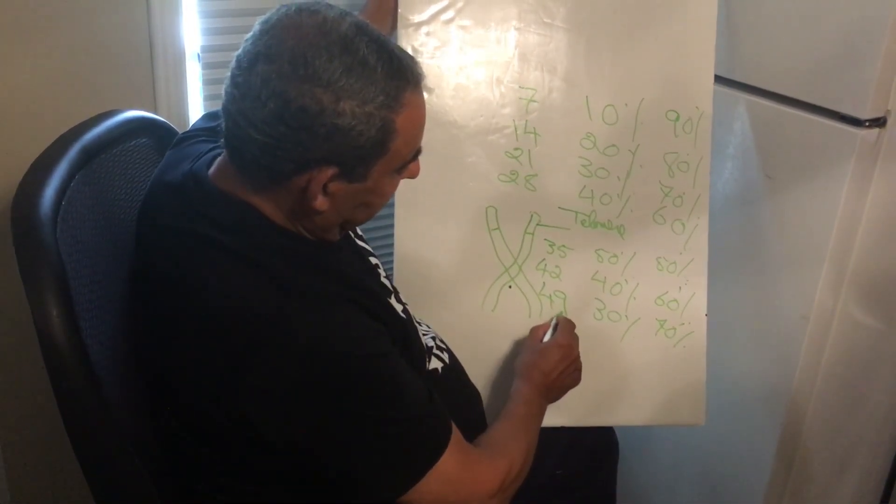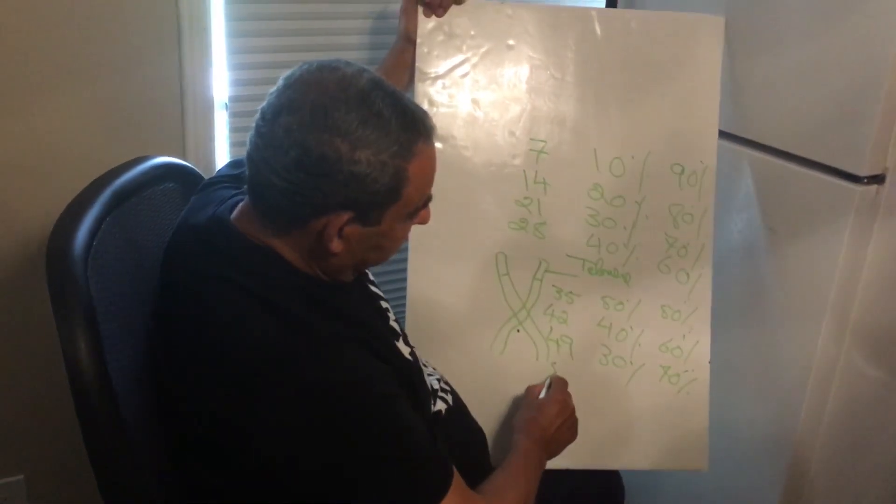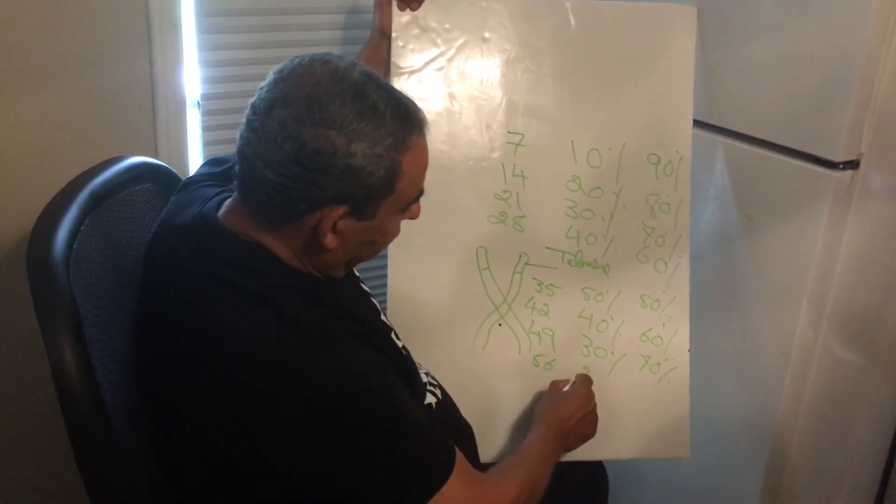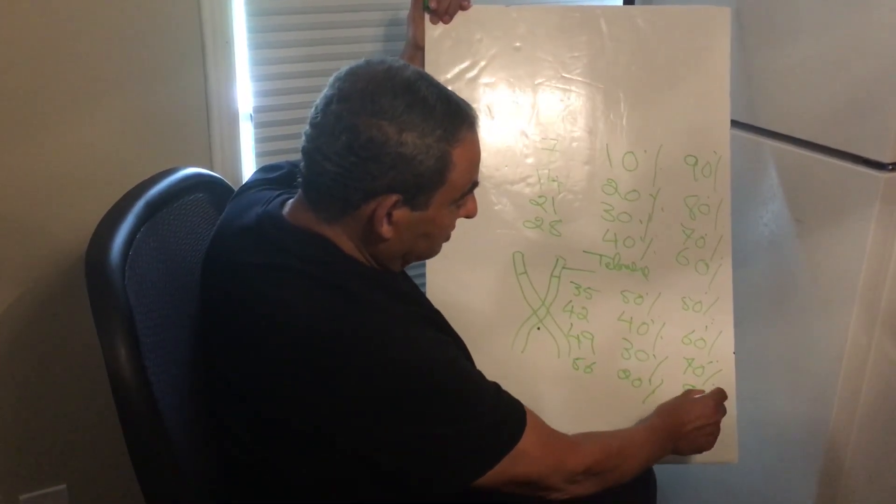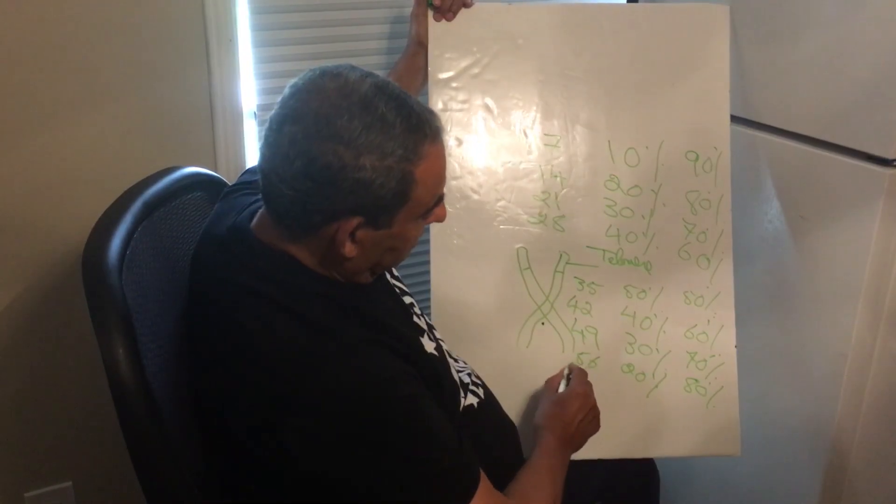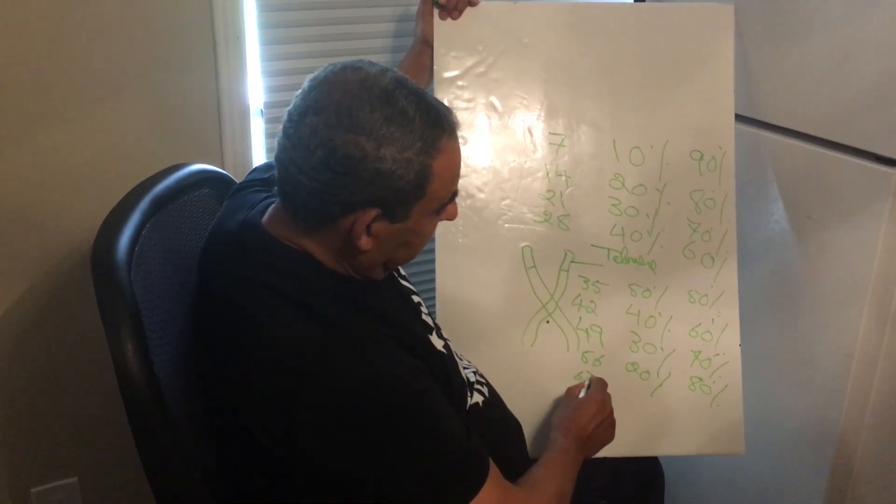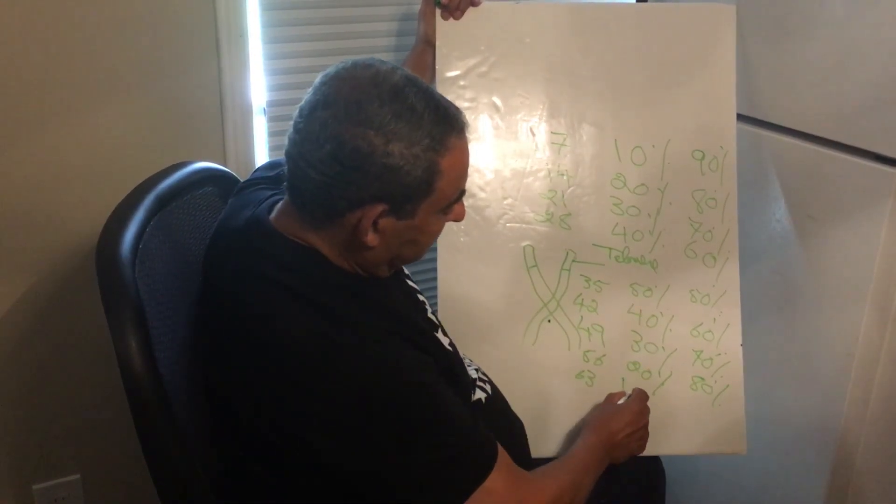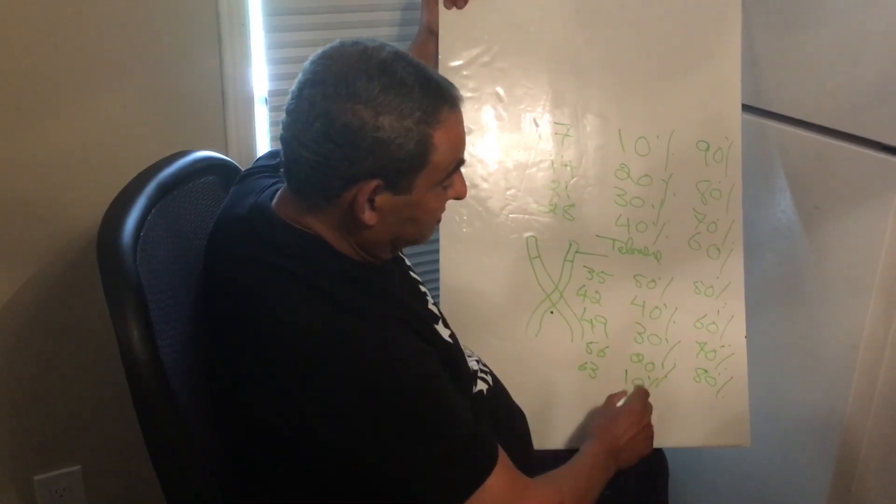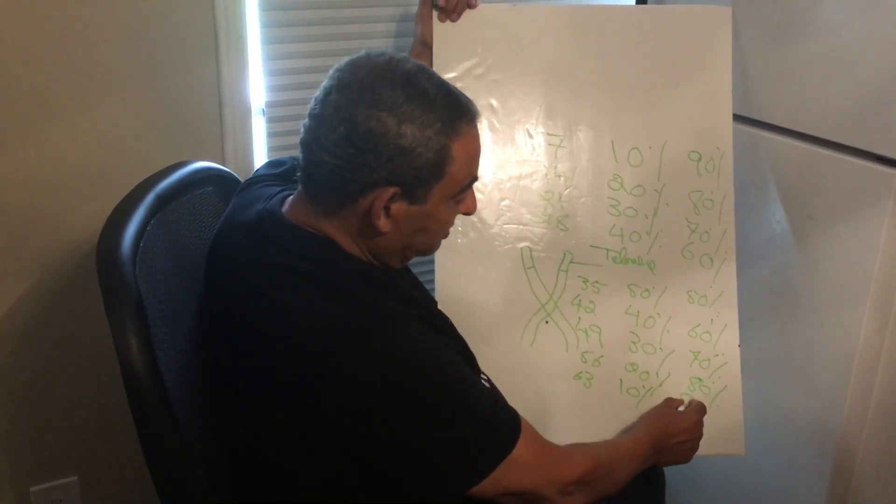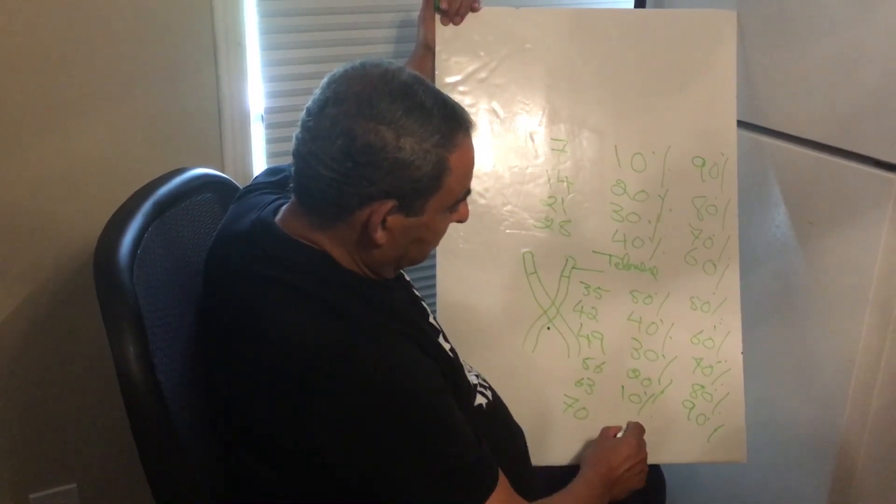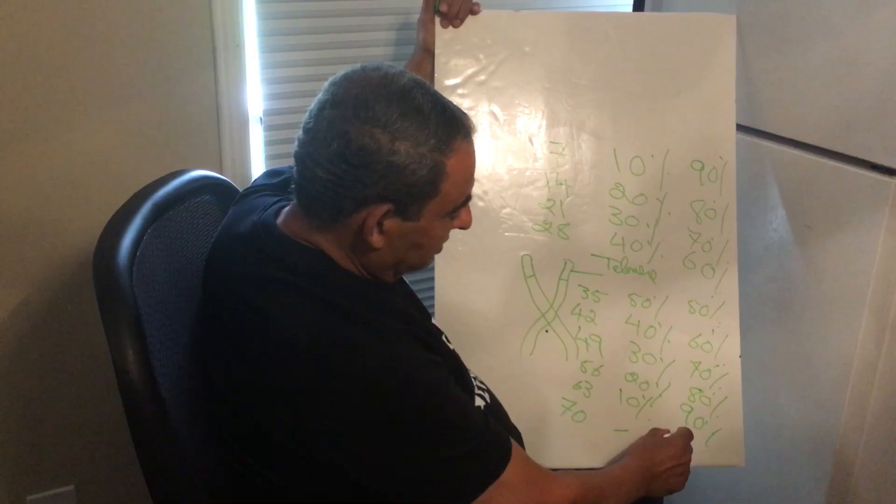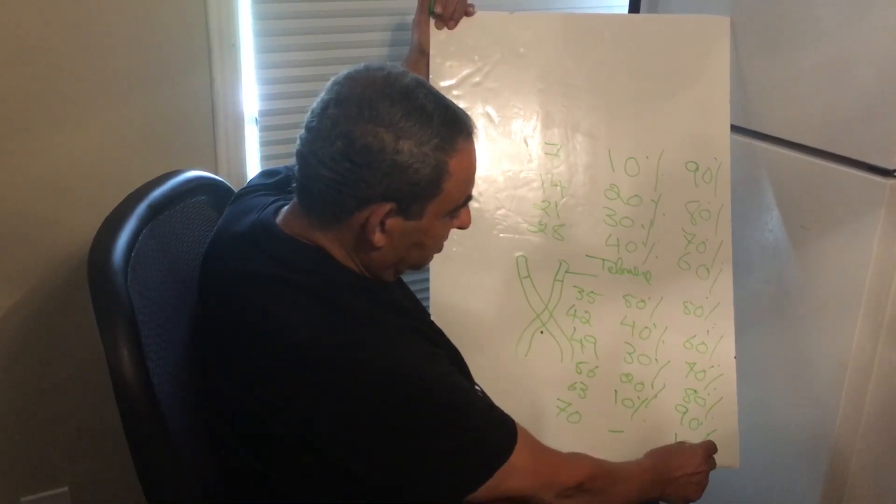At fifty-six, you have twenty percent left and eighty percent depleted. At sixty-nine years old, you have ten percent left and ninety percent depleted. At seventy years, nothing left and a hundred percent depleted.